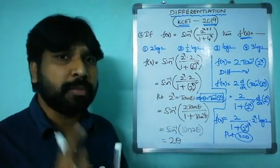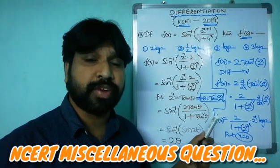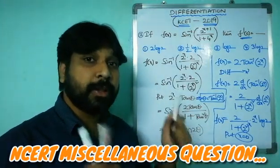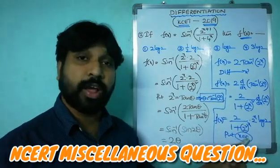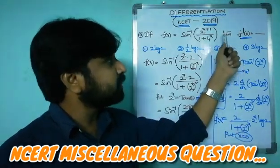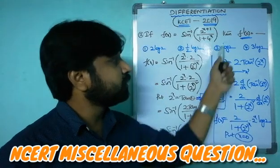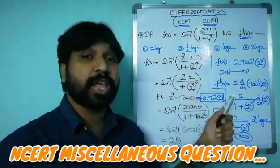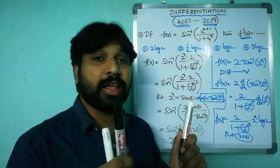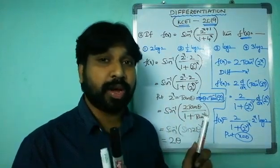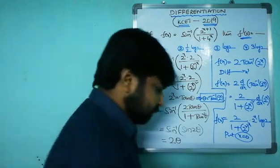One important point about question two: this is a completely NCERT-based question from the derivatives chapter — a miscellaneous example converted into an objective question. NCERT is very important for the KSET examination. Coming to the third question.